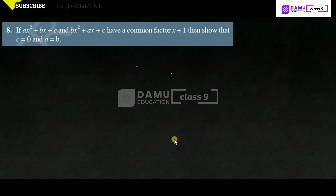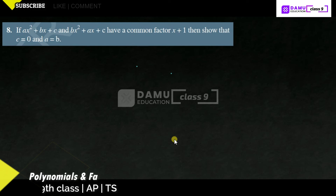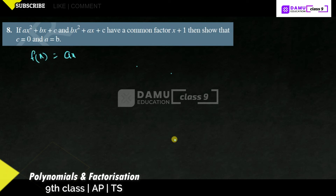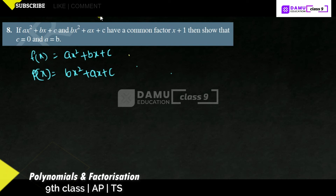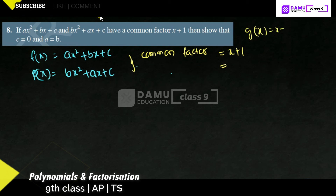In this module, we are going to discuss the 8th question. If ax² + bx + c and bx² + ax + c have a common factor x + 1, show that c = 0 and a = b. Let f(x) = ax² + bx + c and p(x) = bx² + ax + c. The common factor for both will be equal to x + 1.